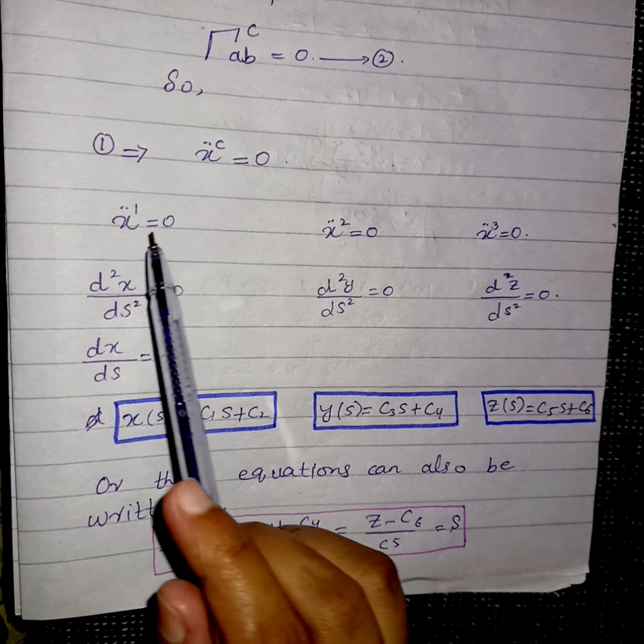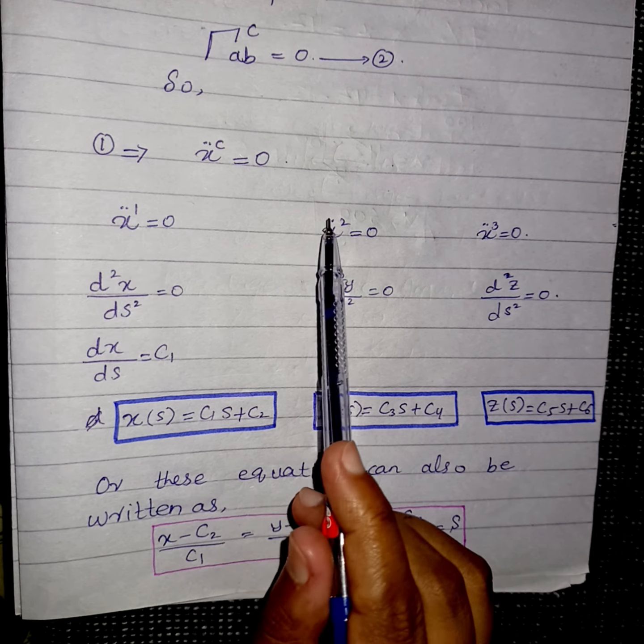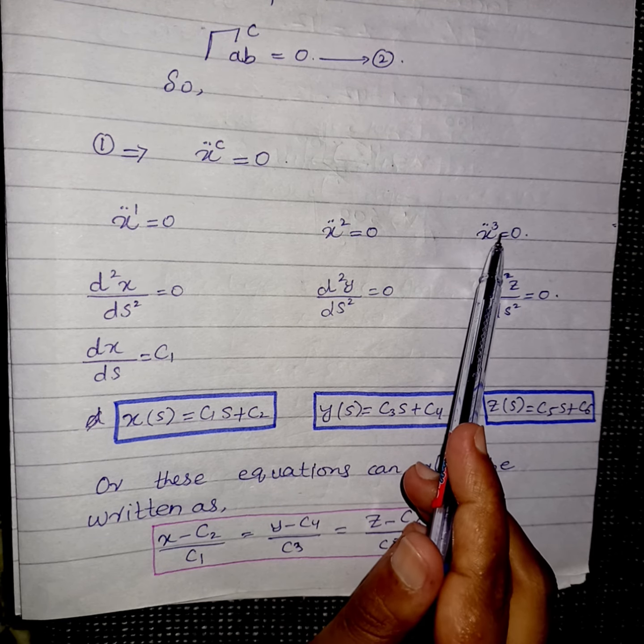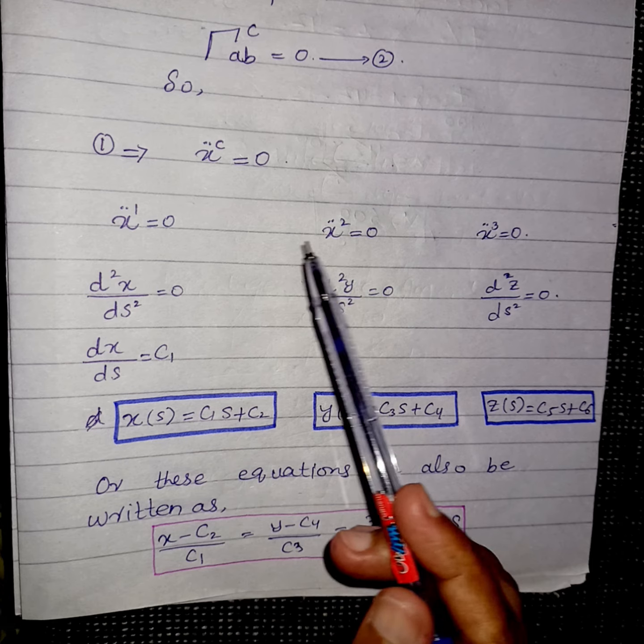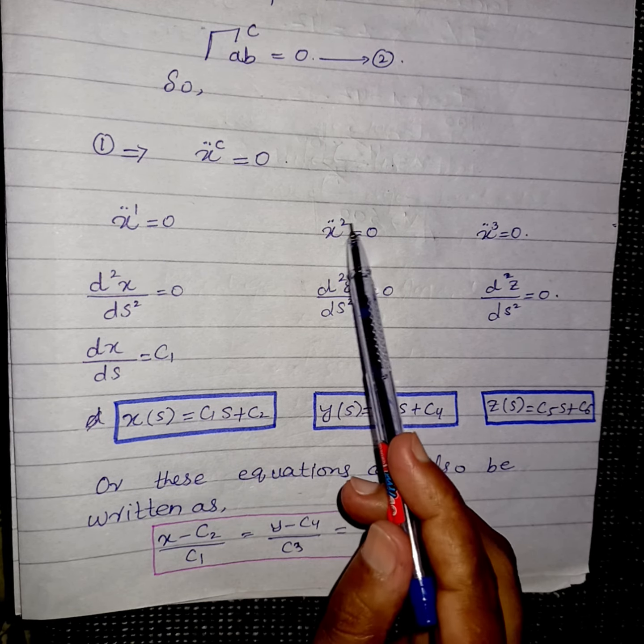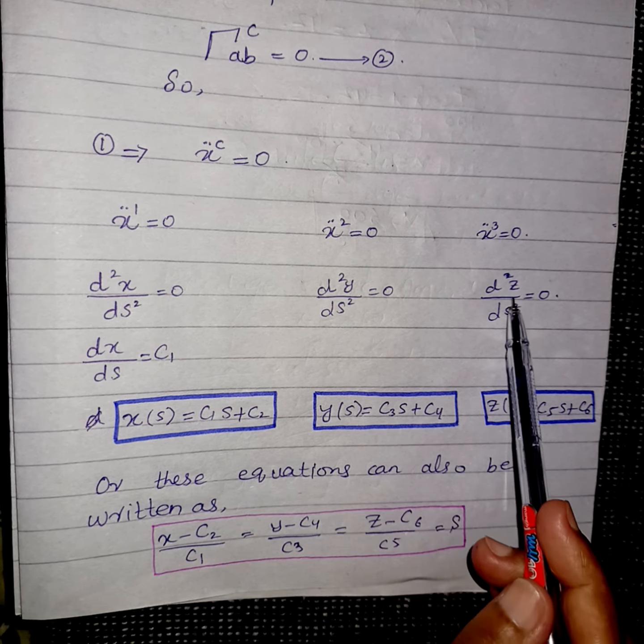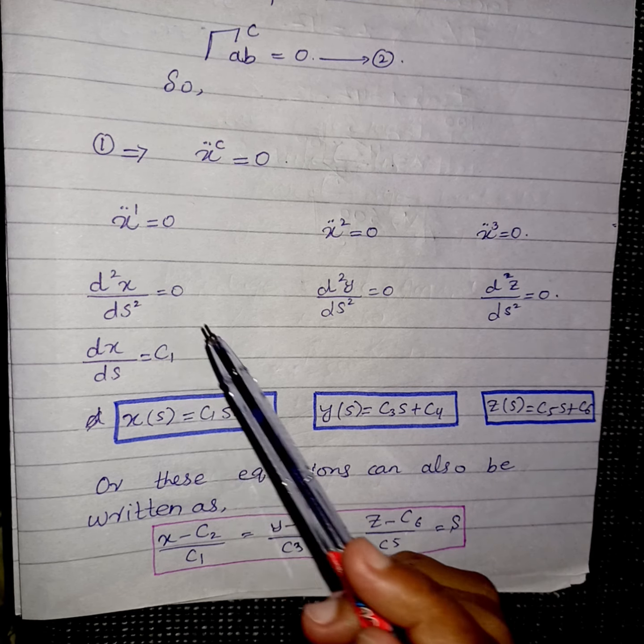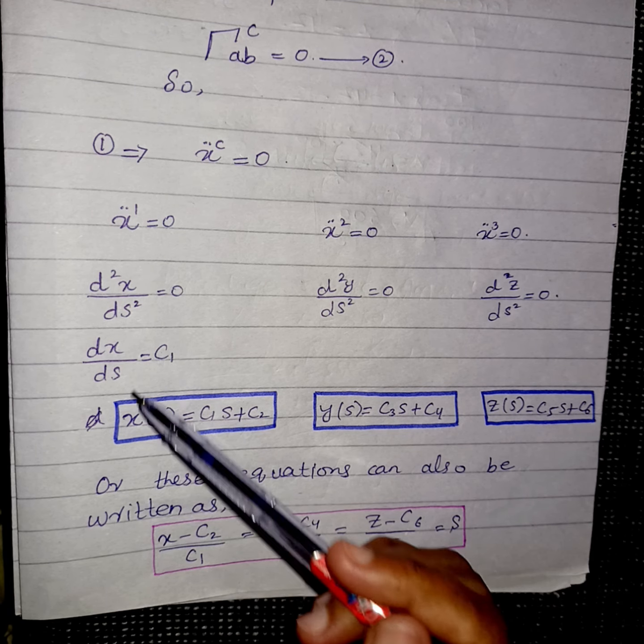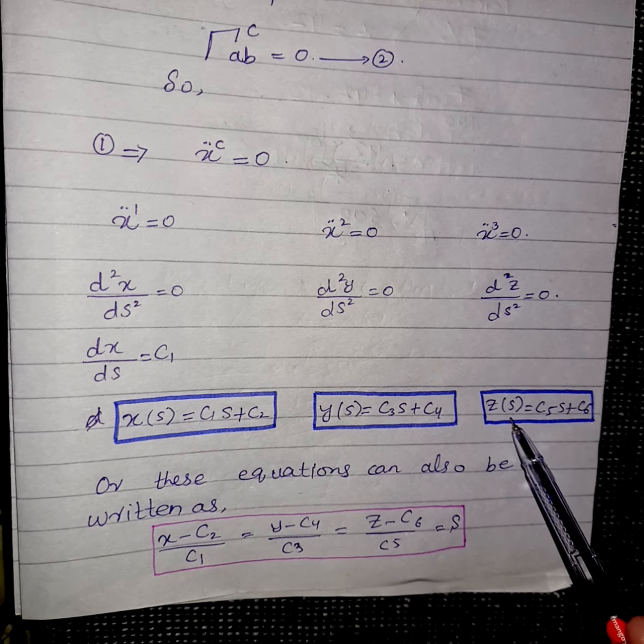So first I have set c = 1, then c = 2, then c = 3 for three-dimensional space. x¹ means x, x² means y, and x³ means z. If we simplify further after integration, we will get these three equations.